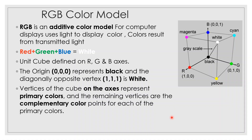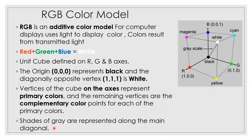The vertices of the cube on the axes represent the primary colors RGB. The remaining vertices are the complementary colors for each primary — cyan, magenta, and yellow. Black is (0,0,0) and white is (1,1,1). Shades of grey are represented along the main diagonal of the cube.